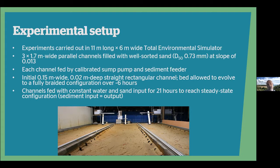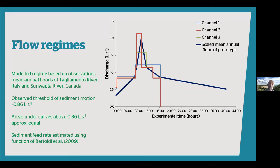At the end of that six-hour period, we fed each channel with constant water and sand input for a further 21 hours until we reached a steady state in terms of the balance between sediment input and sediment output. The flow regime was modelled based on observations from the same facility, where the threshold of sediment motion was about 0.86 litres per second, plus information about the mean annual floods of the Tagliamento River, scaled using Froude scaling, and also the Sunwapta River, which had roughly the same scaled width as our experimental channel. We estimated the equilibrium sediment feed rate using the function Walter Bertoldi had developed based on his own experimental braided channels in 2009.